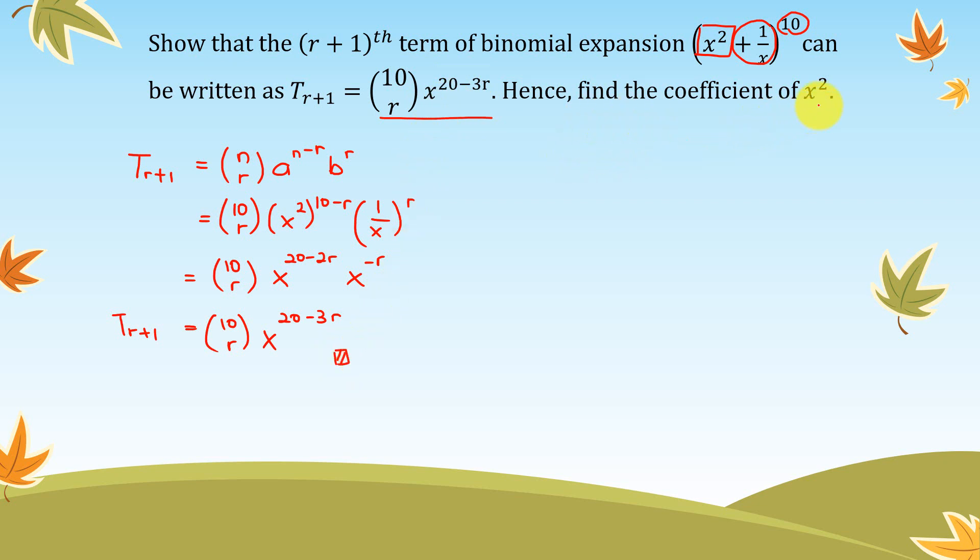Hence, find the coefficient of x². So the term with x is over here. So we compare x^(20-3r) with x². Therefore, 20 - 3r should be equal to 2.